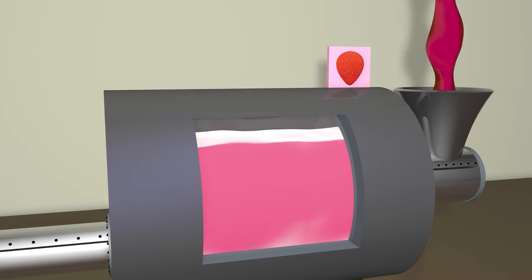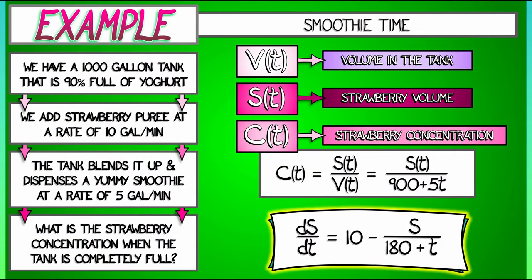Yeah, that one. The specifics are worth recalling: thousand gallon tank, 90% full of yogurt, add strawberries at this rate, blend it up, drain it out at that rate. From this setup we had a couple of variables: V the volume, S the amount of strawberry stuff, and C the concentration of the strawberry stuff in the smoothie.